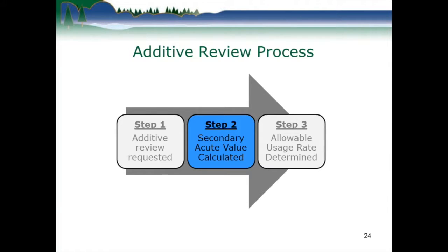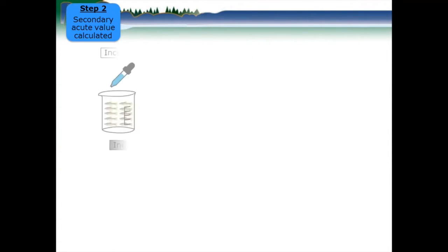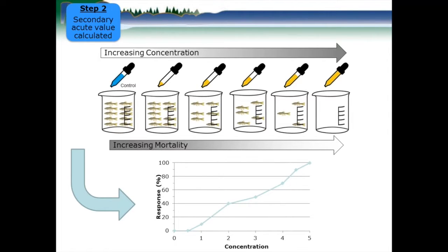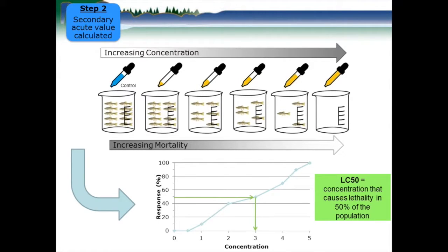Once we have all that information, we calculate the secondary acute value. In a toxicity test, we expose organisms to increasing concentrations of a substance — in this case, the additive. Generally, as the amount of product increases, so does toxicity, producing what's known as a dose-response curve. On the vertical axis is the response in percent mortality, and on the horizontal axis we have concentration. From this we obtain the LC50 — the concentration that causes mortality in 50% of the population. In this example, the concentration is 3. This is a general overview of how toxicity tests are performed for aquatic organisms.